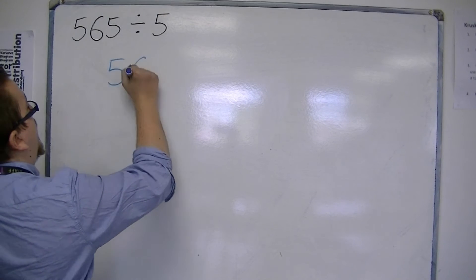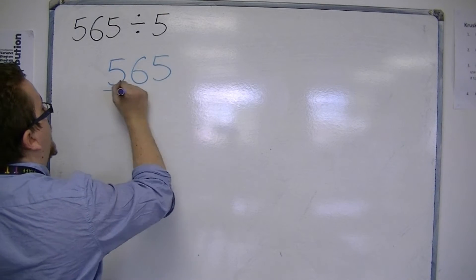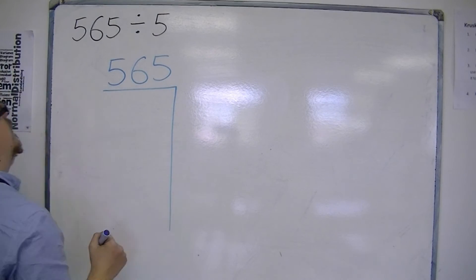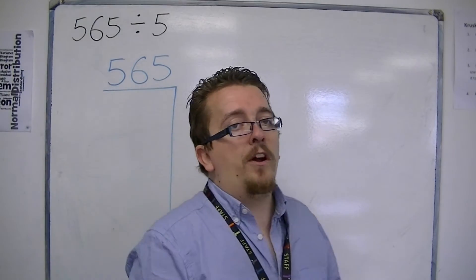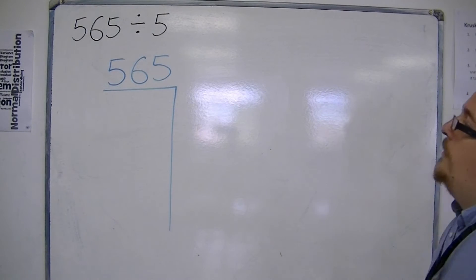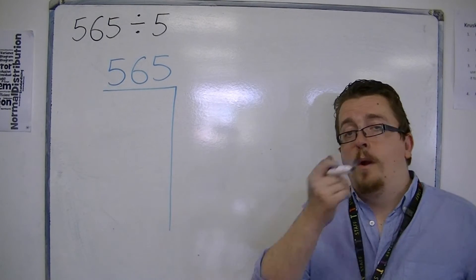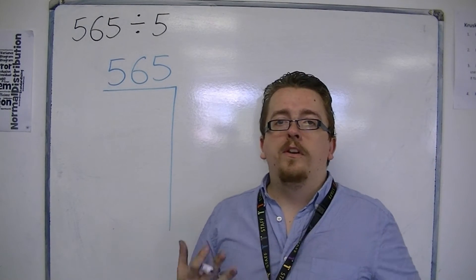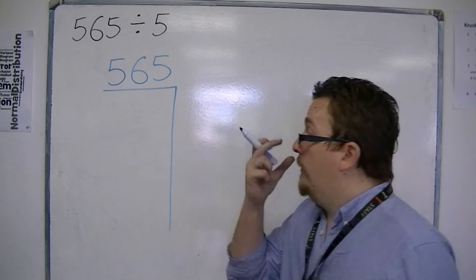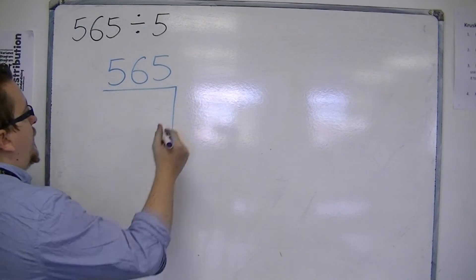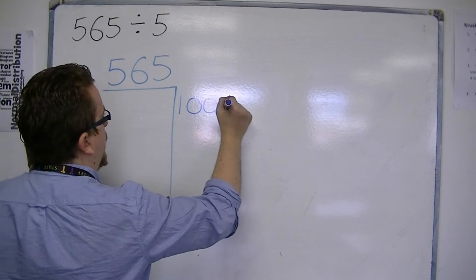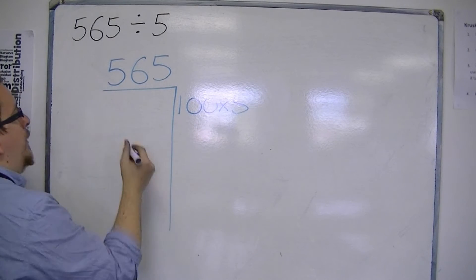And what you want to do is you say to yourself, well, 565 divided by 5. I know that 100 fives go into 565, so I can already say 100 fives go into it. That's 500.